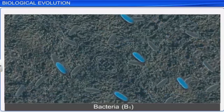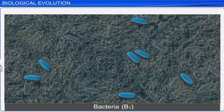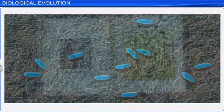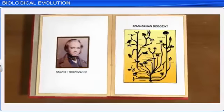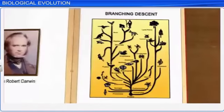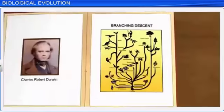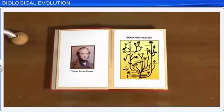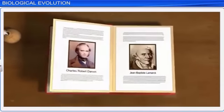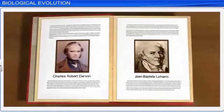Darwin also put forth the concept of branching descent, which explained that various species have evolved from common ancestors by adapting themselves differently. However, this rate of change may have varied across species. In this way, Darwin refuted the old theory of evolution by the use and disuse of organs, propounded by French naturalist Jean-Baptiste Lamarck.